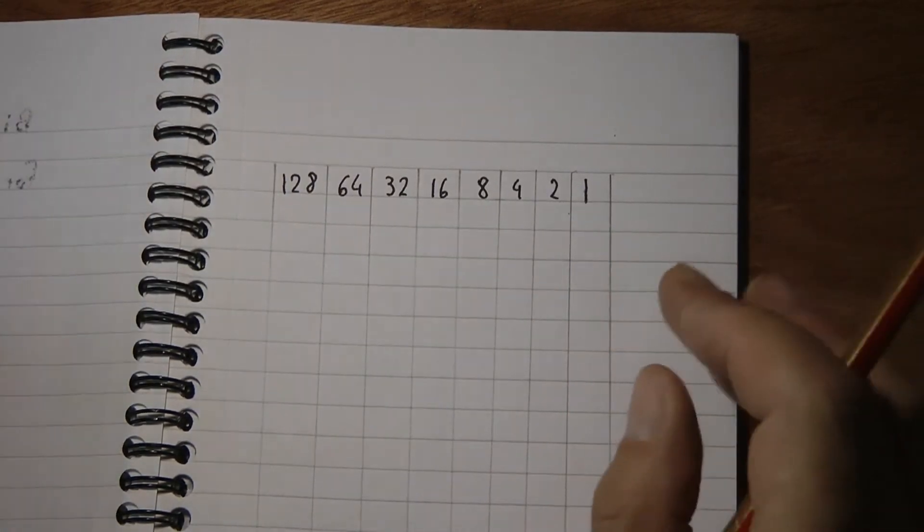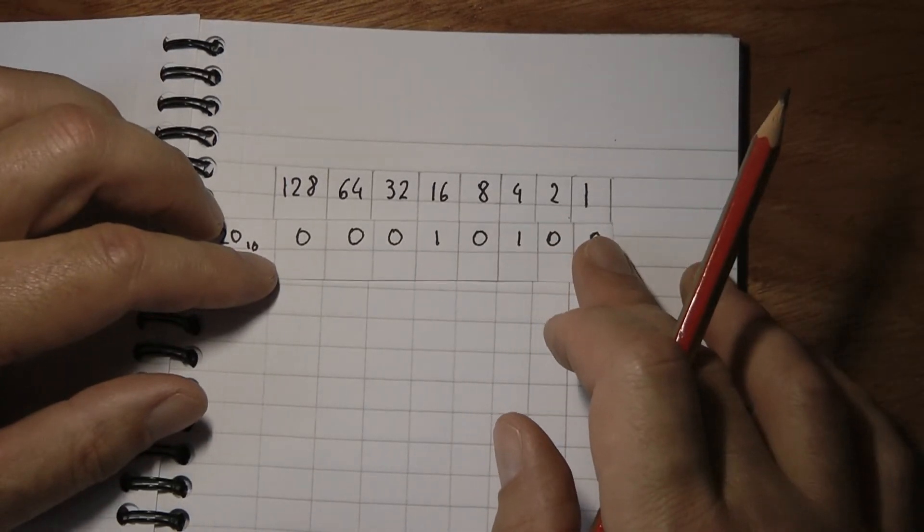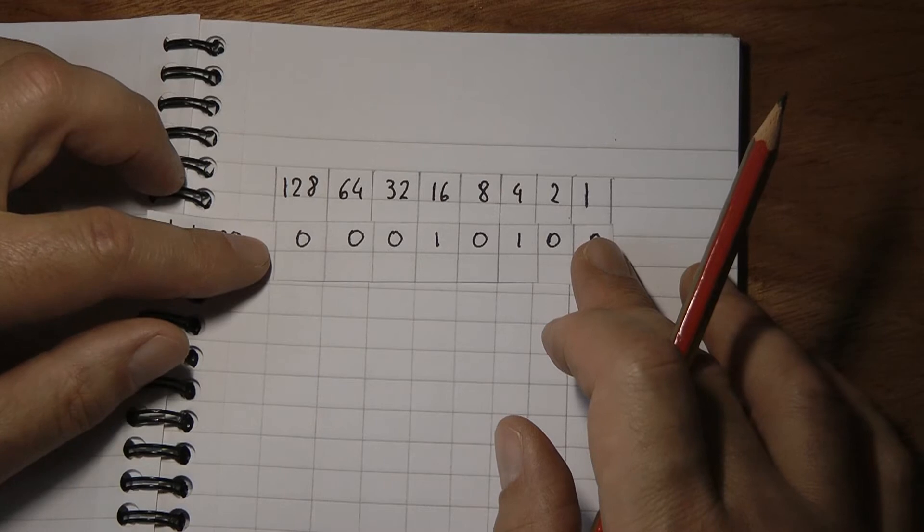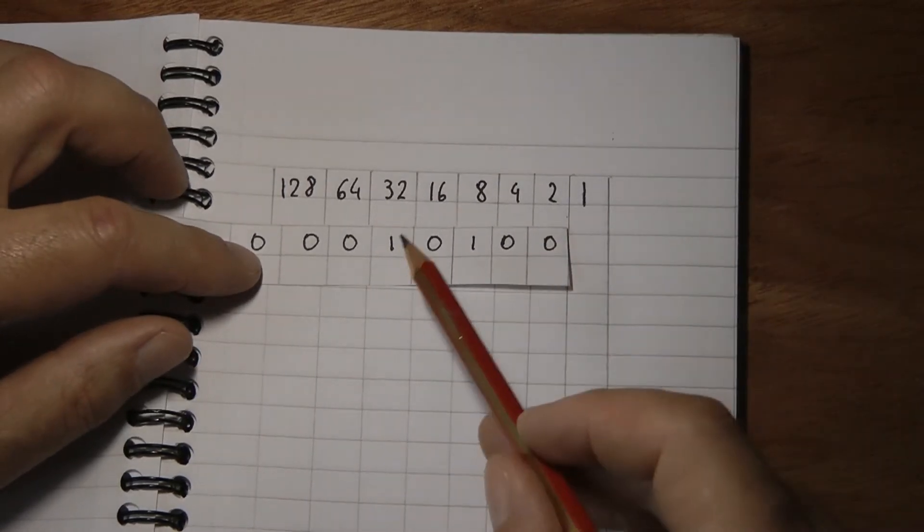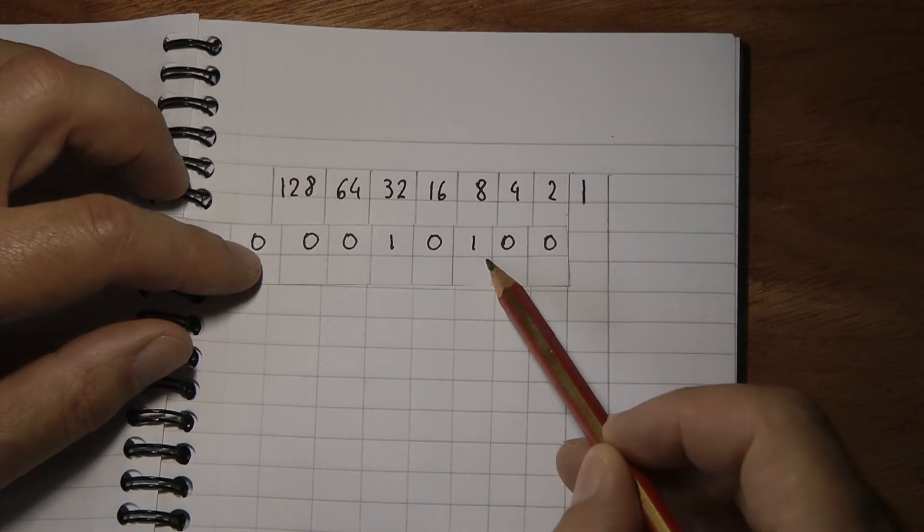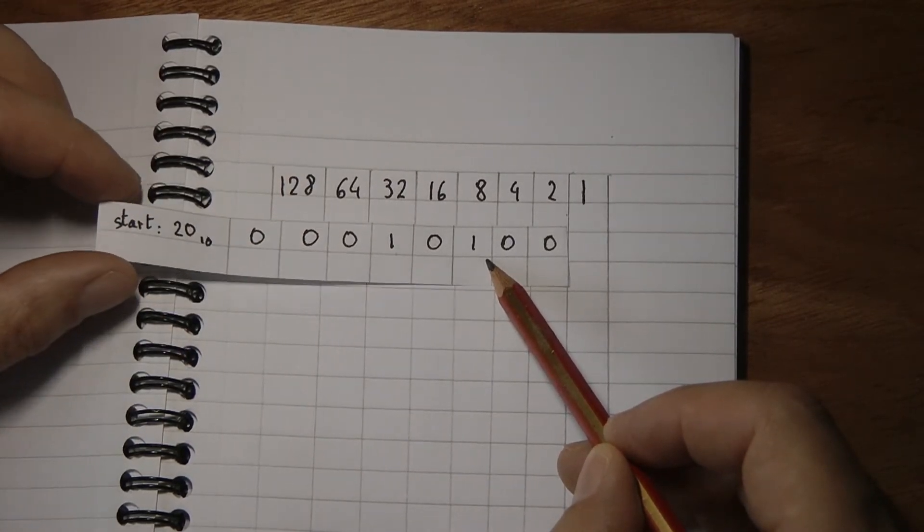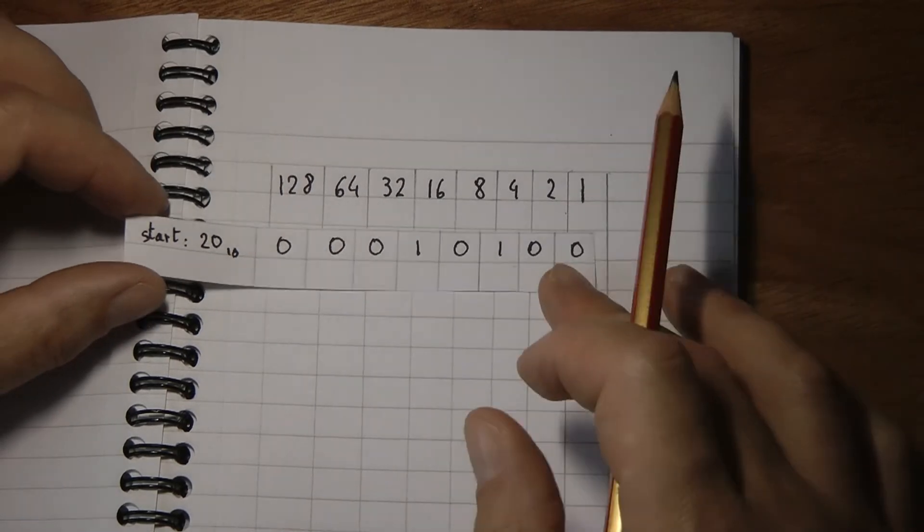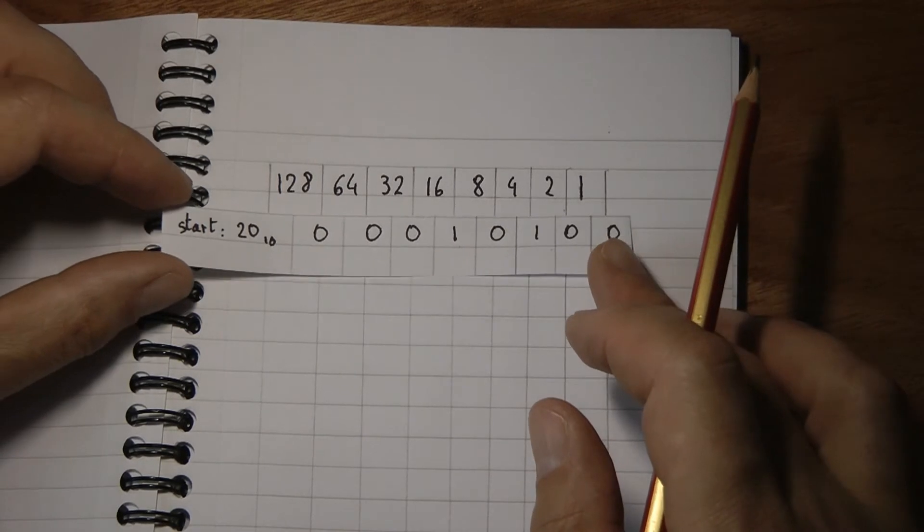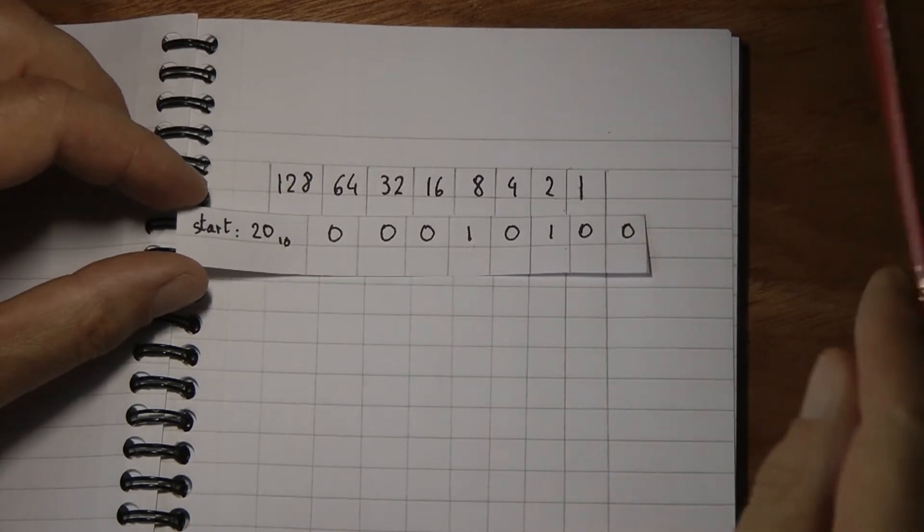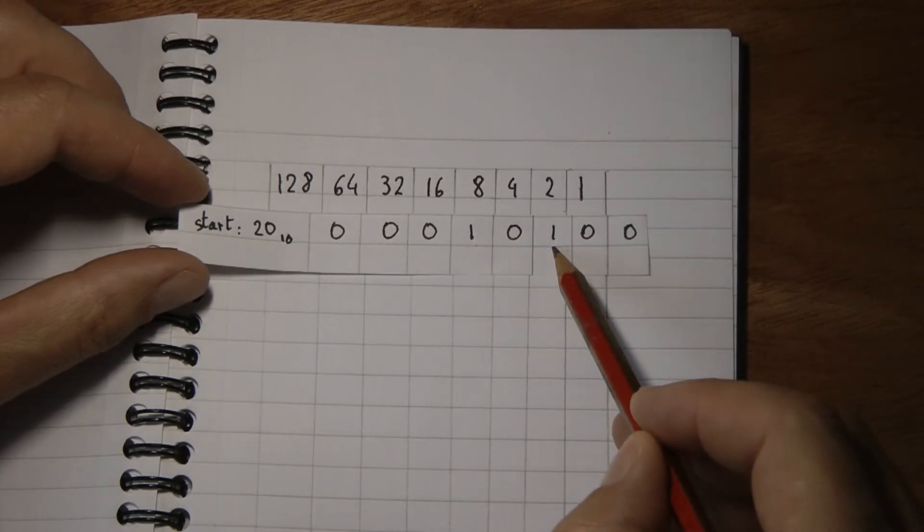Let's do another example. Here's a 20 made of 16 plus 4. If we move to the left, this 20 becomes 32 plus 8, 40. We've multiplied our starting value by 2. If we shift our 20 to the right, our number has now become 8 plus 2, 10. We've divided the number by 2.